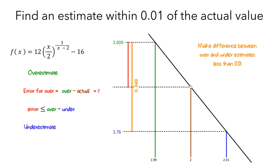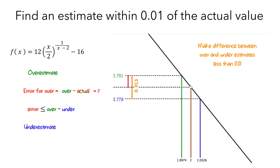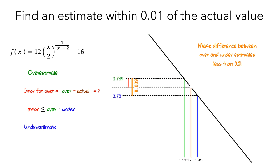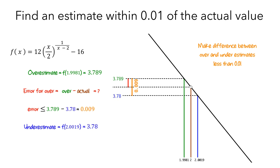So let's make the values of x closer to 2. We'll stop once the difference between the overestimate and underestimate is less than 0.01. Now the overestimate is equal to 3.789, and the underestimate is equal to 3.78. So the difference between the overestimate and the underestimate is 0.009, which is less than 0.01. So any approximation of the height of the hole between 3.78 and 3.789 will be within 0.01 of the actual height of the hole.